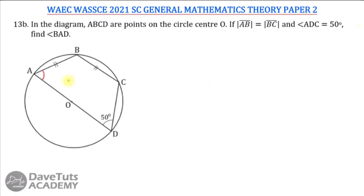A very crucial point that will help us is to divide this particular diagram. Since we are told that AB equals BC, let's bring in an isosceles triangle. We can look at a scenario in which we draw a line from point A to point C.